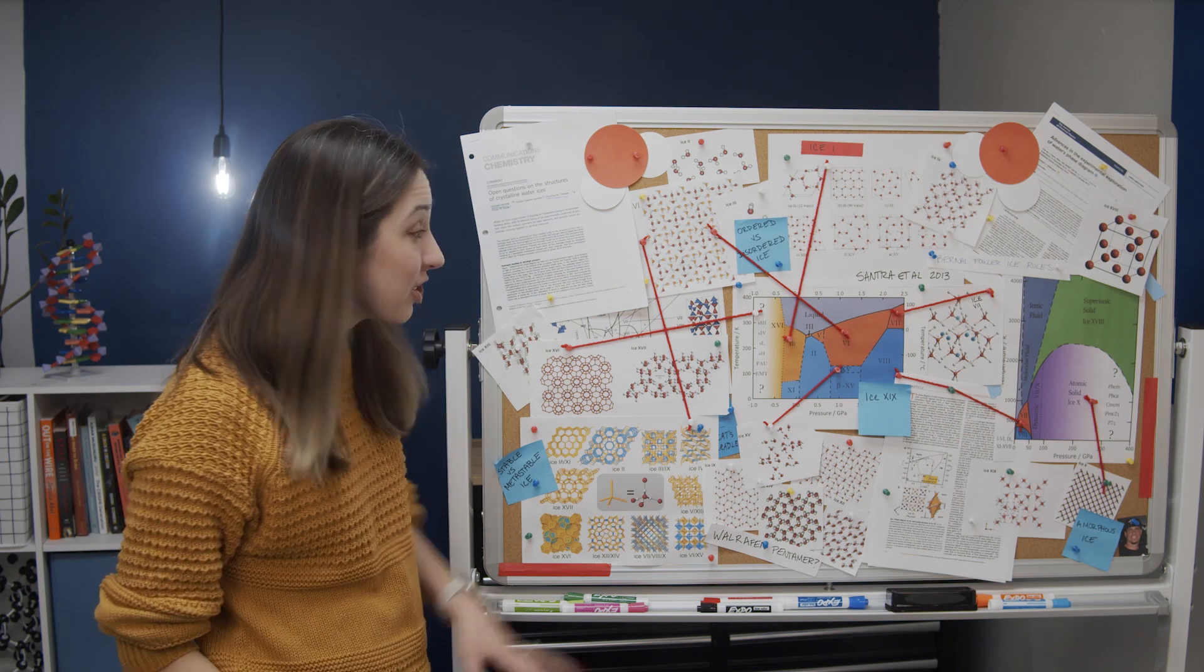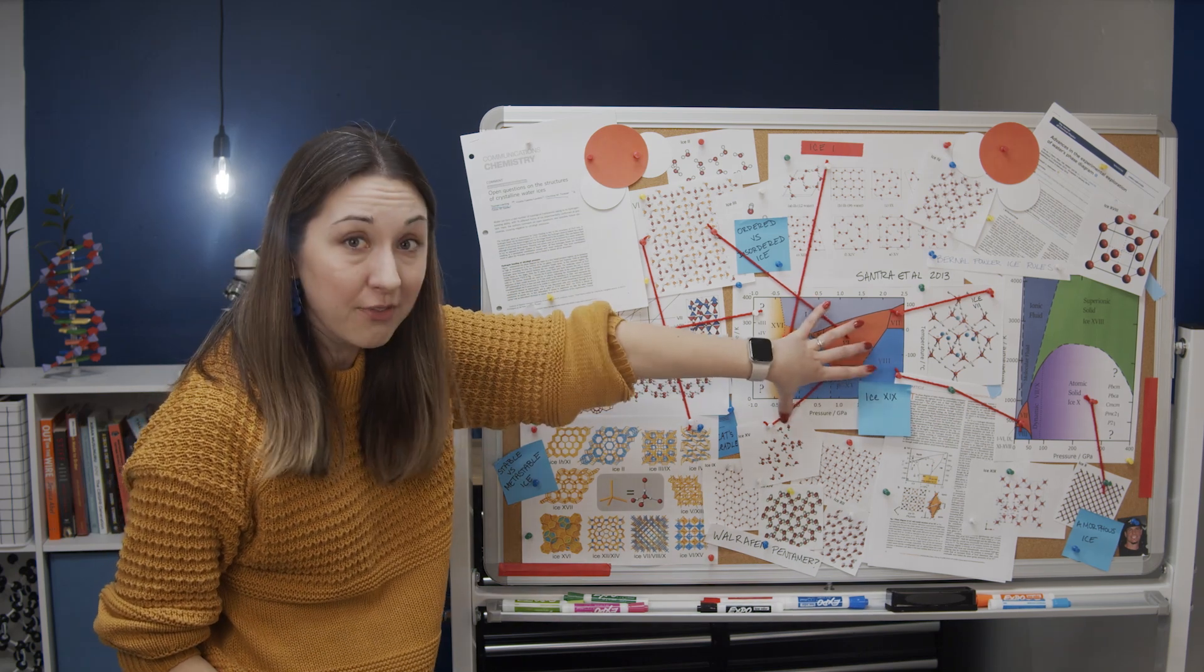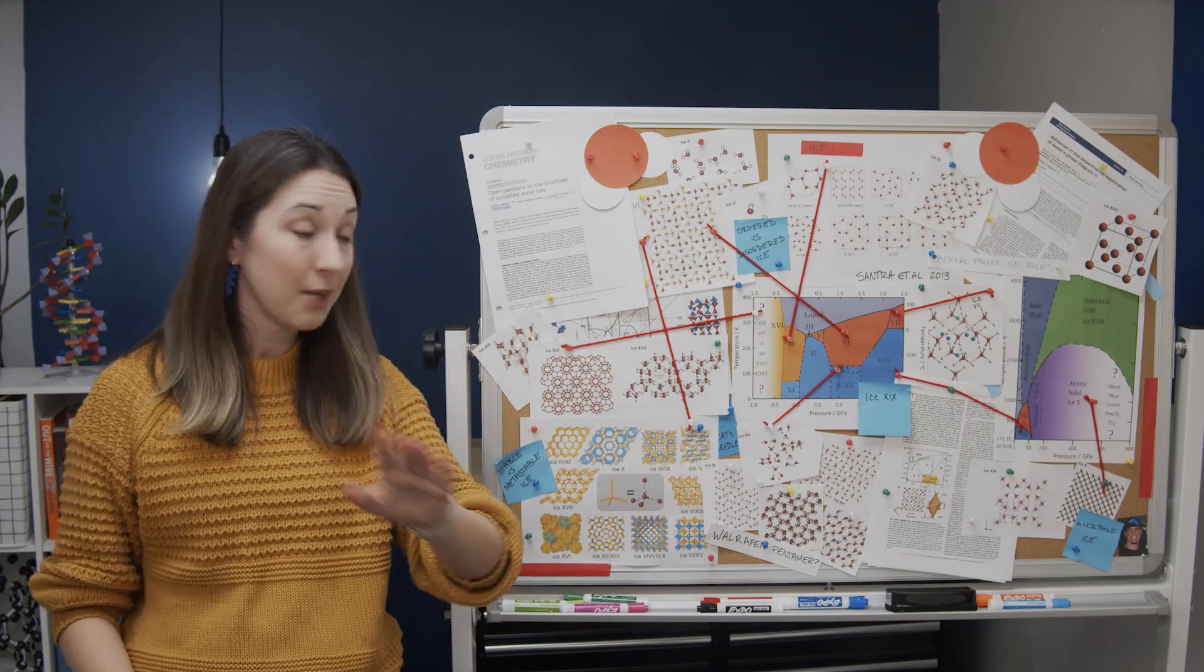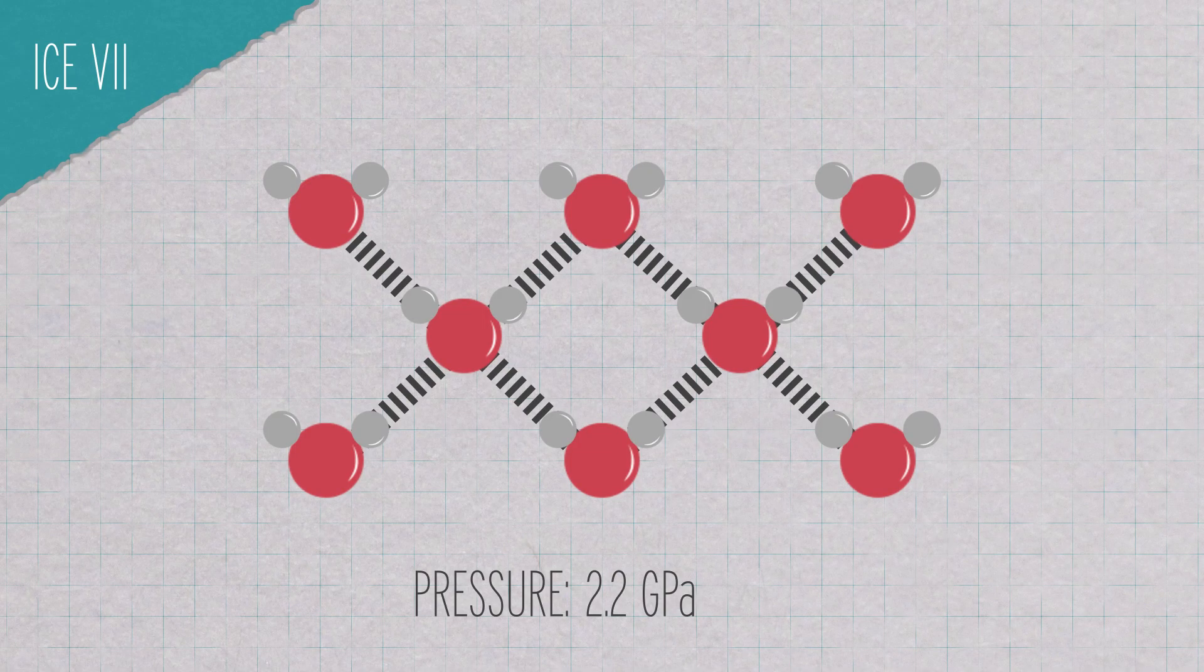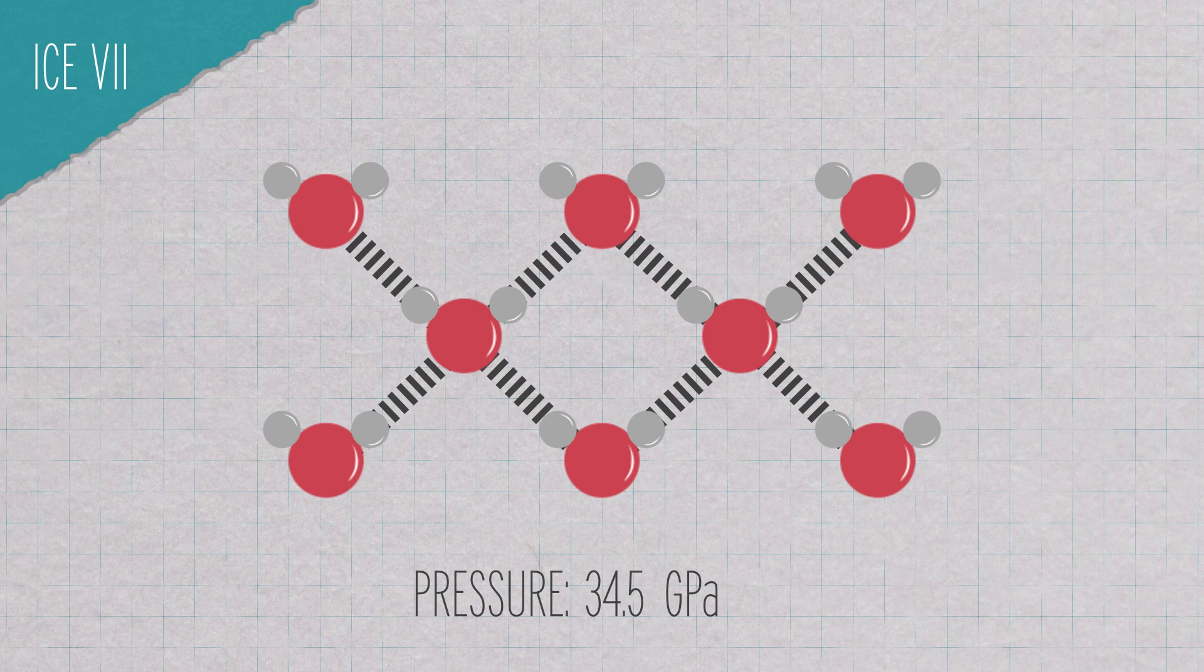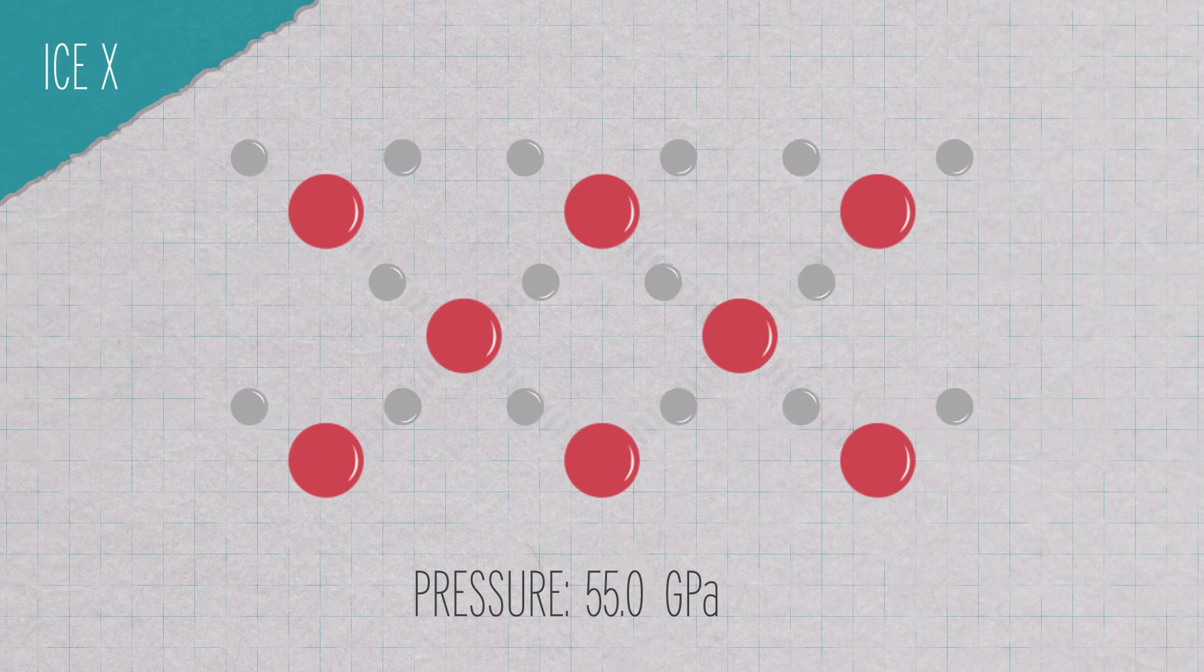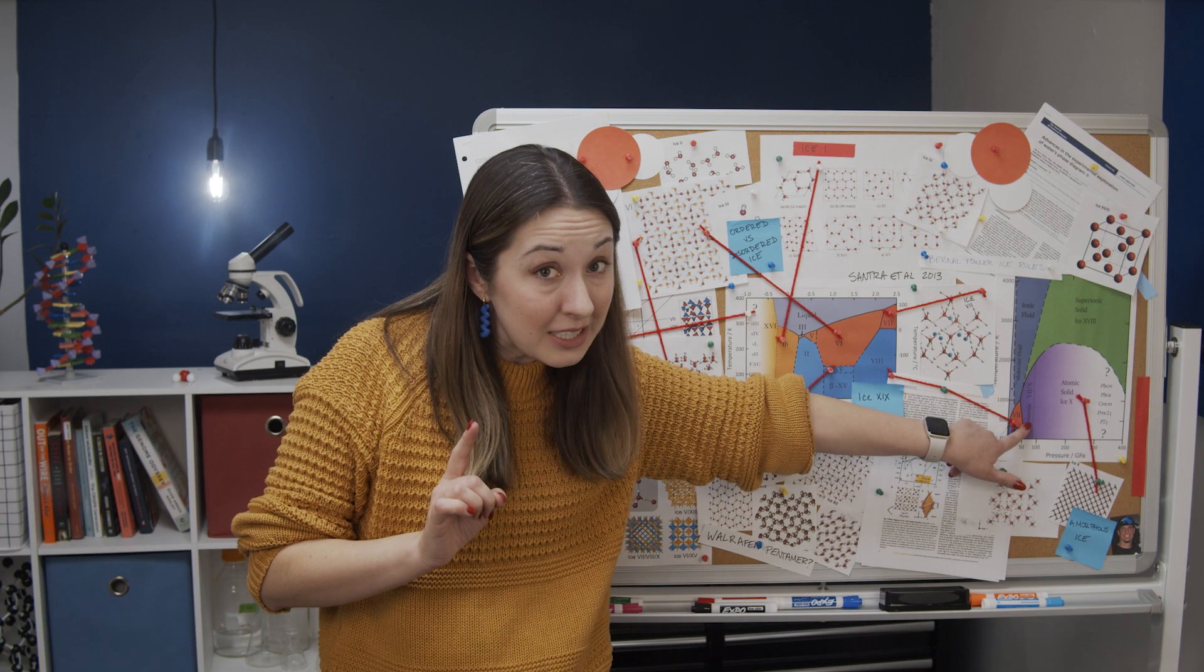But you can even look for structures that don't fit on this graph. We are talking about some really weird conditions. So for example, if you take ice 7 and you compress it to 50 to 300 gigapascals, you can get to ice 10. And ice 10 is strange because the water molecules aren't even water molecules anymore because the hydrogen bonds become symmetrical between the oxygens and you cannot assign a hydrogen to a single oxygen anymore. And if you heat it to over 2500 Kelvin, it doesn't melt.